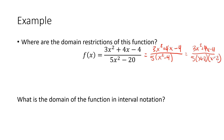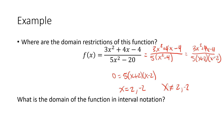To find what values of x make the denominator zero, we set the factored denominator equal to zero: 5 times (x plus 2) times (x minus 2) equals zero. Using the zero product property, x equals 2 and x equals negative 2 both make the denominator zero, so x cannot equal 2 or negative 2. The domain in interval notation is negative infinity to negative 2, union negative 2 to 2, union 2 to infinity.